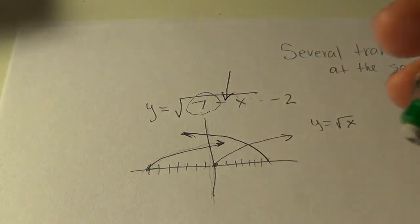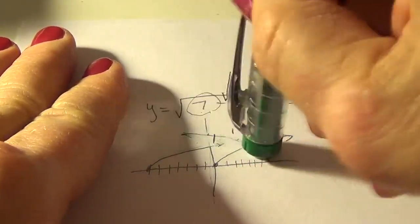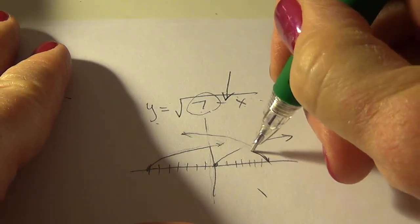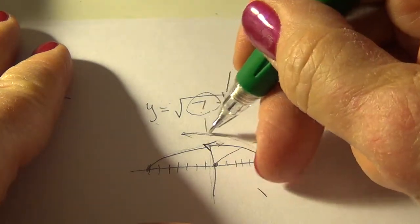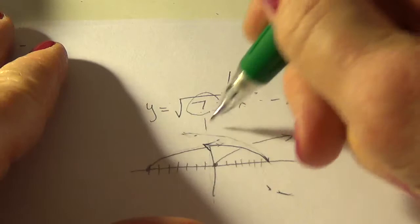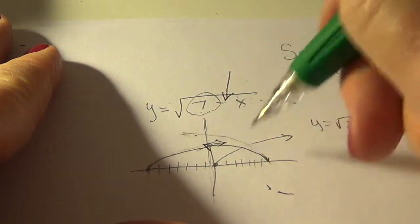All right, not supposed to be bigger like that. Supposed to be exactly the same shape. So it would look flatter than that. All right. So ignore that first one. It was too high. All right. So the reflection of this was this.